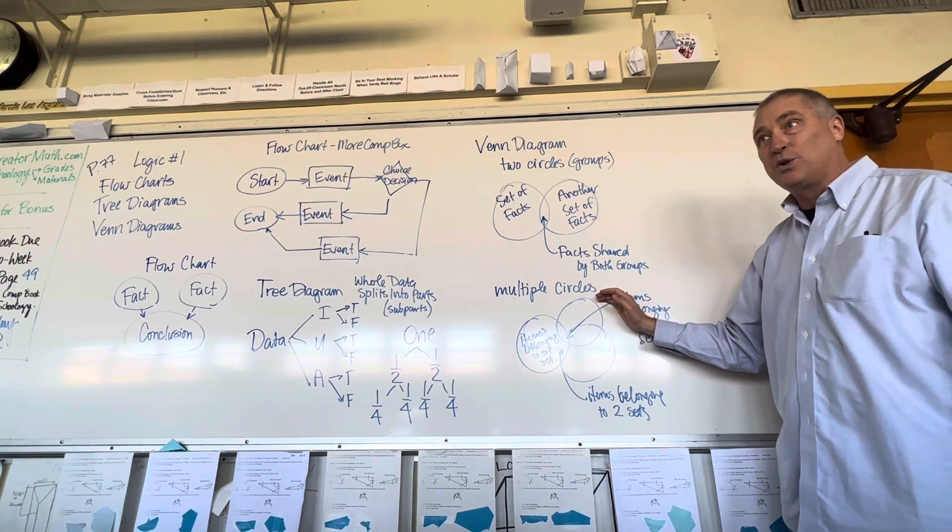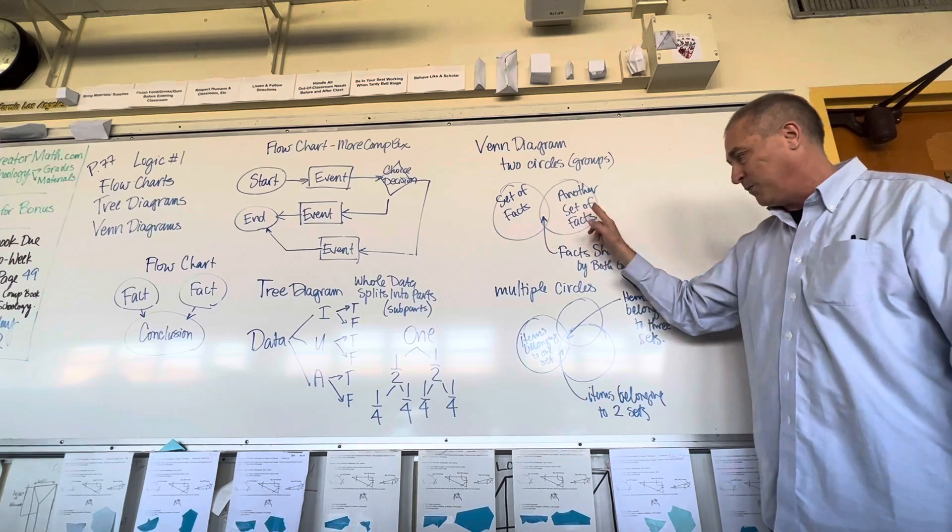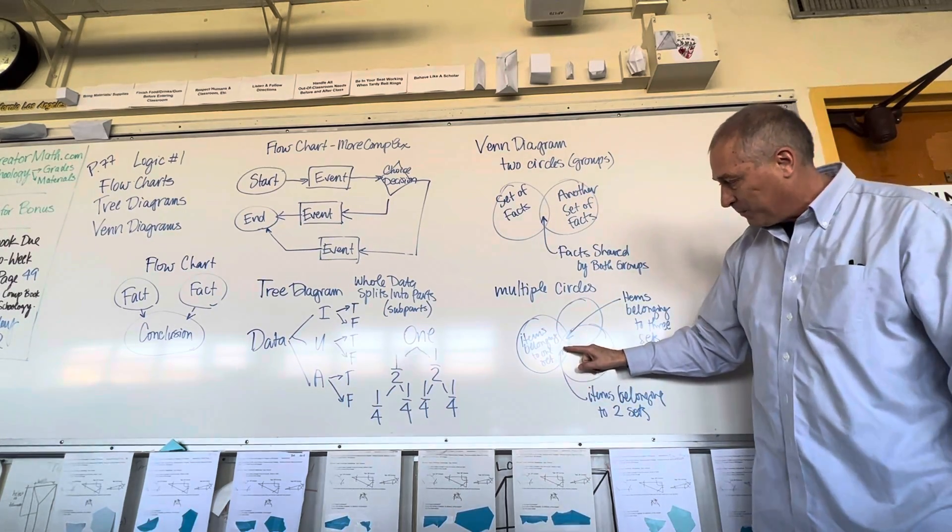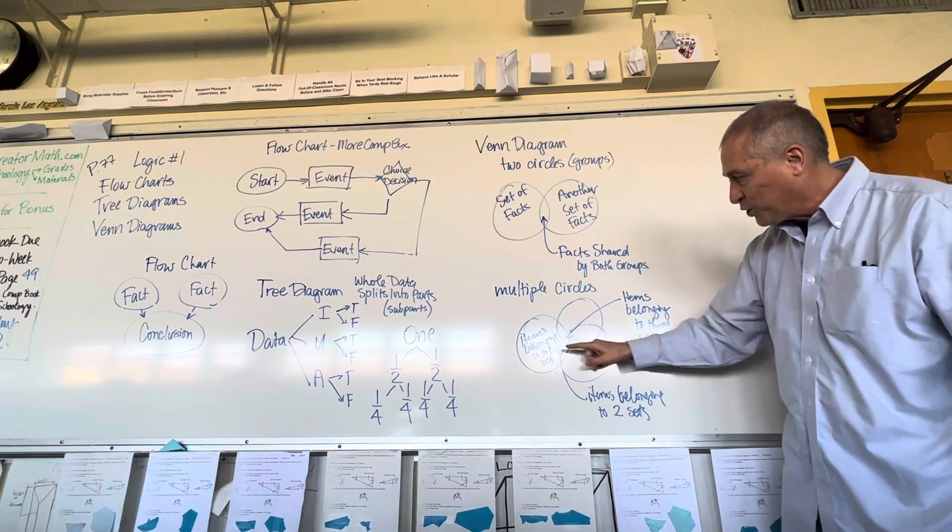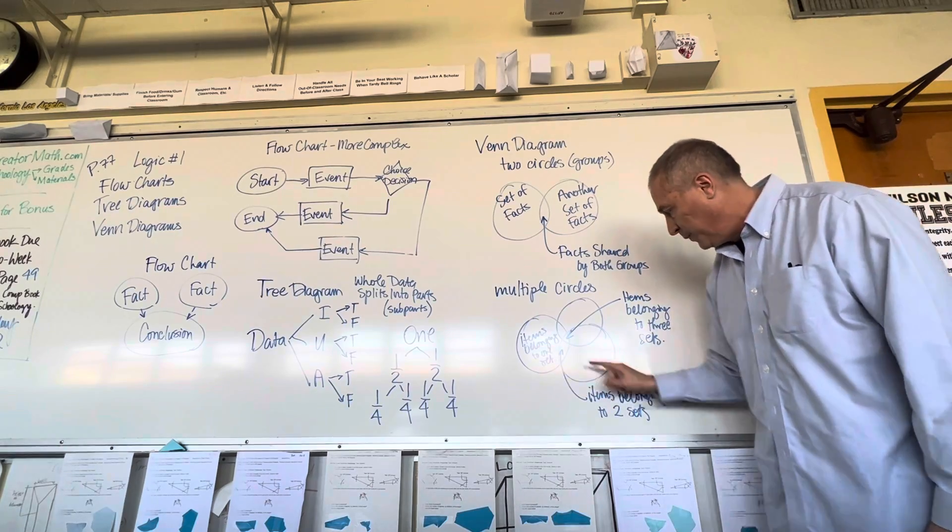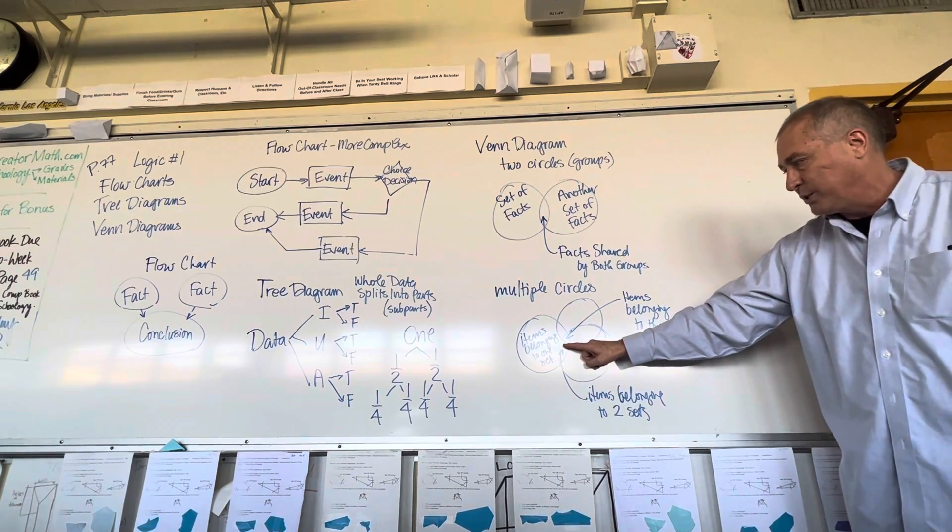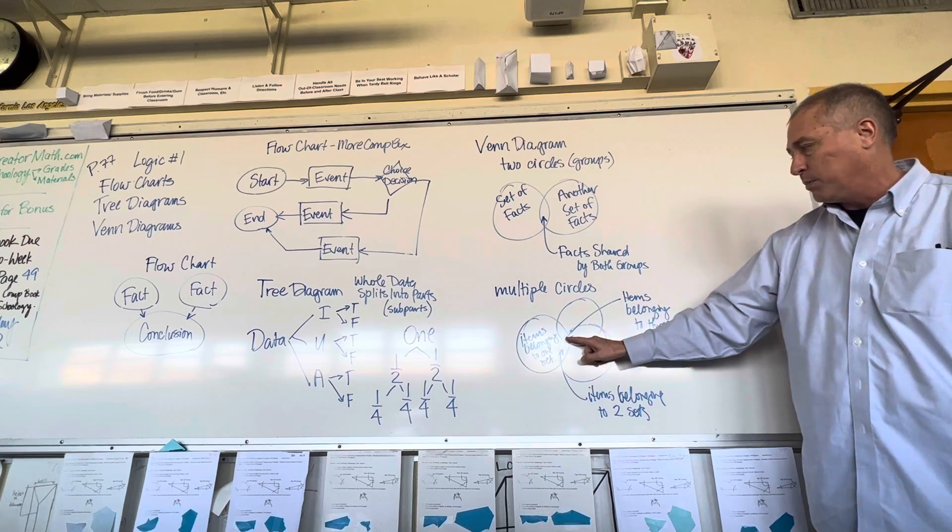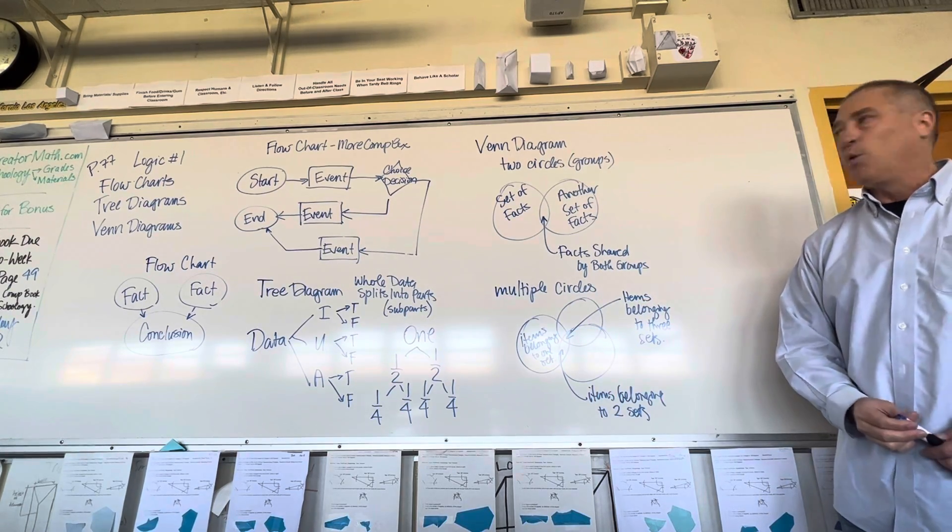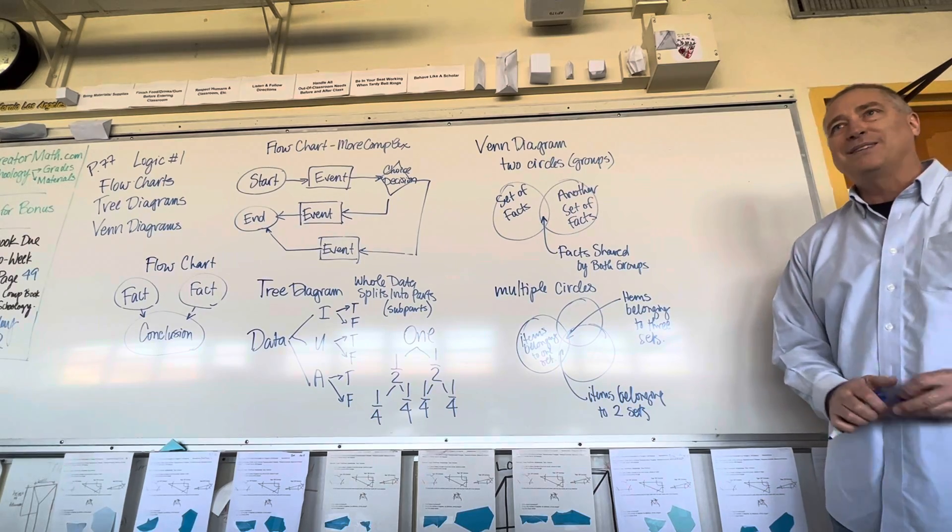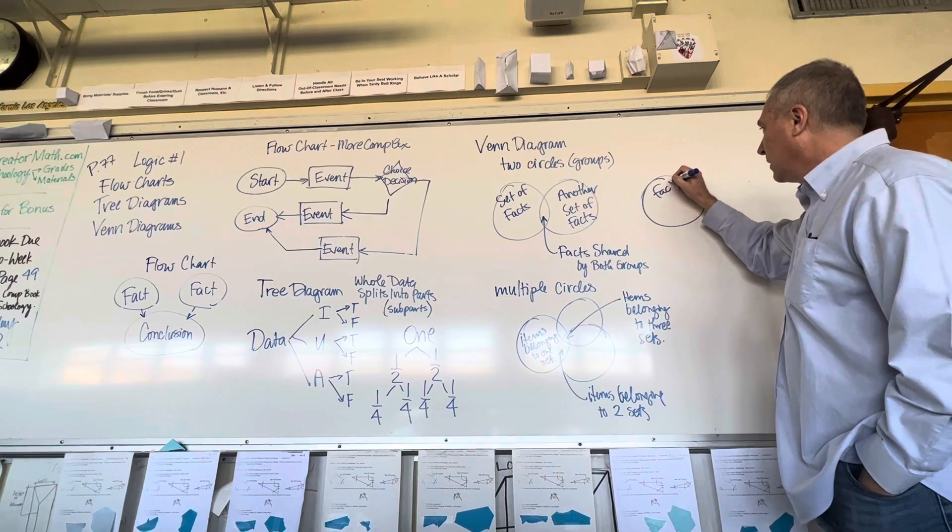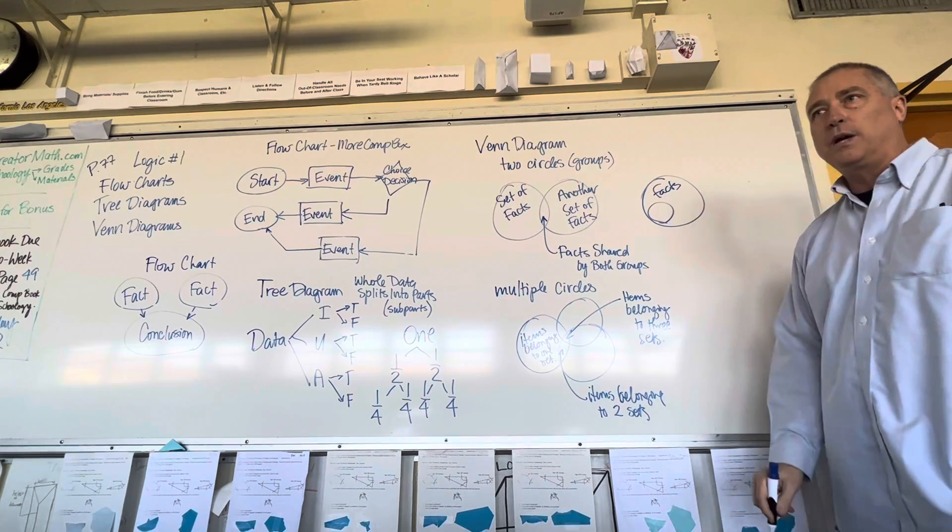And you can increase the number of circles. So, this one's two sets of facts. This one's three sets of facts, right? So, right here, see how these two circles overlap? So, these items belong to one set. These items belong to two sets. And these, right in the middle here, belong to all three sets. It's probably more common, and this is a little bit of a variation, that you have the set of facts, and then you have subsets within it, too, is another way. Okay, here's the common one I always love to ask you guys. Can you be in California and in the United States at the same time? Yes. Right? Yes, we are, right?